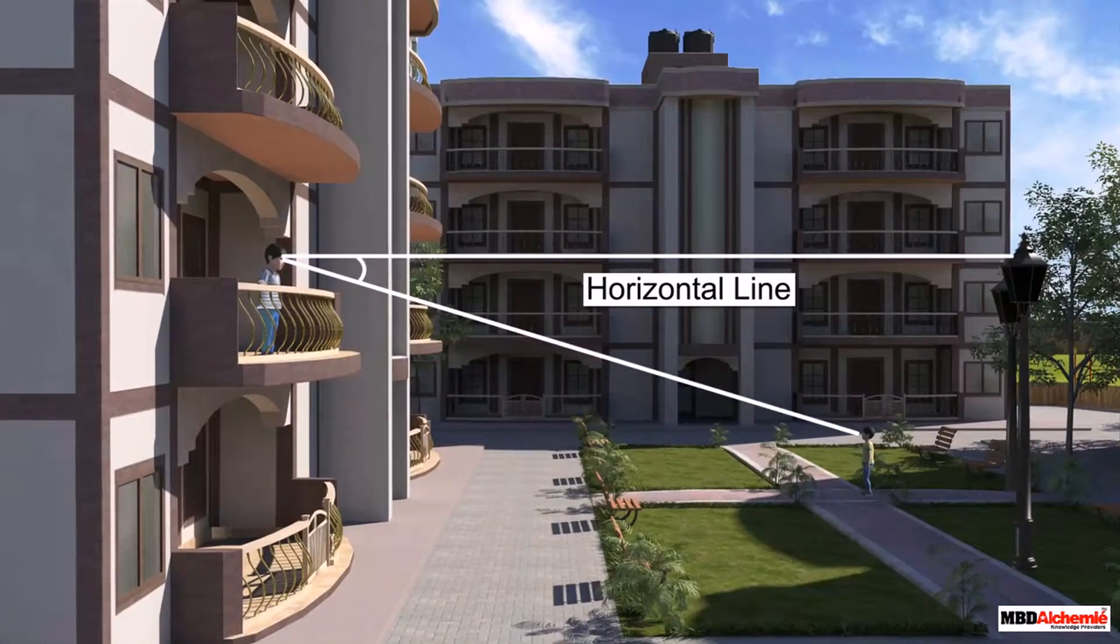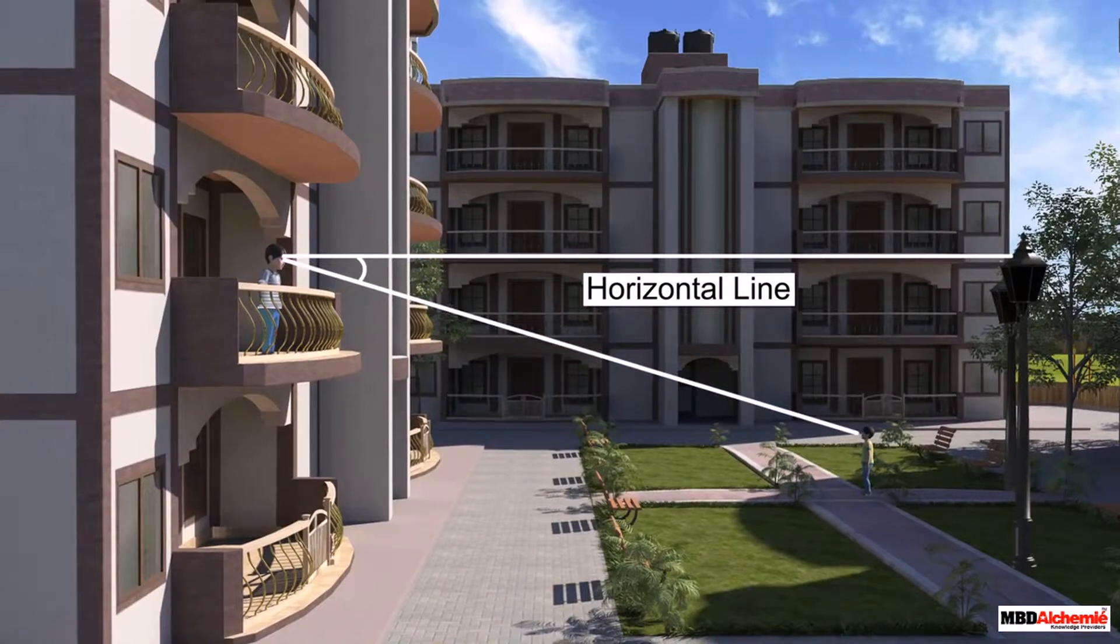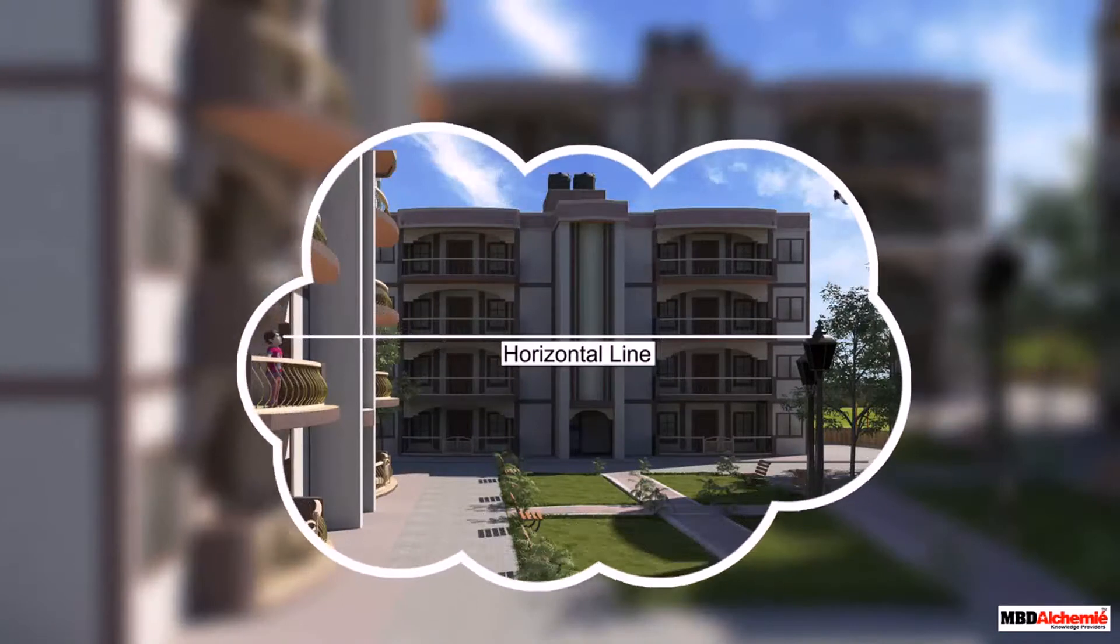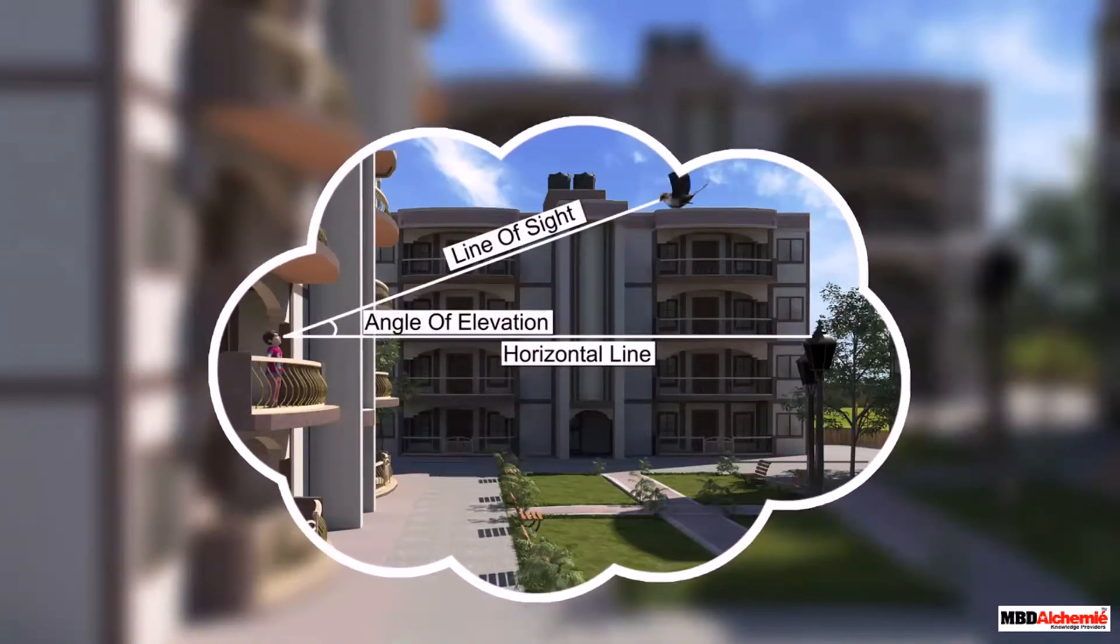When I was looking at Parvay, an angle was formed between the line of sight and the horizontal line. But it can't be the angle of elevation as I was not looking up.